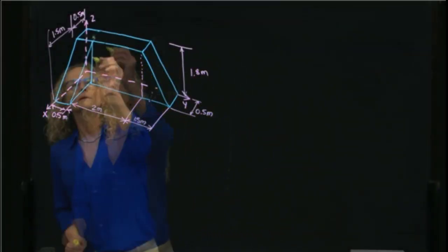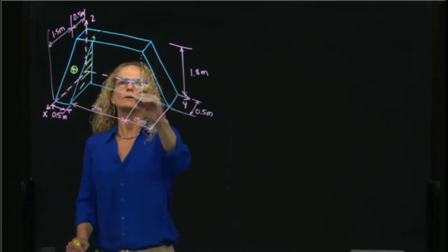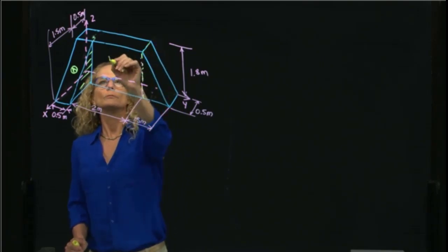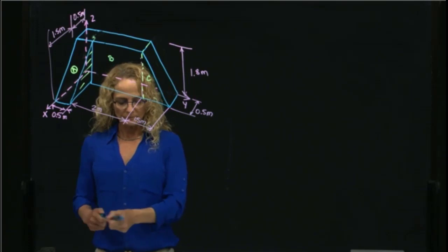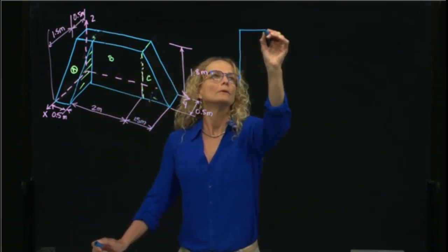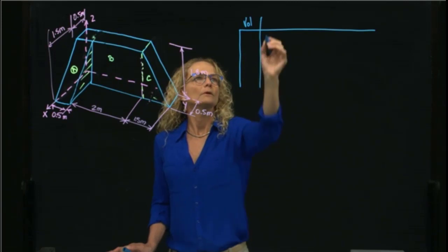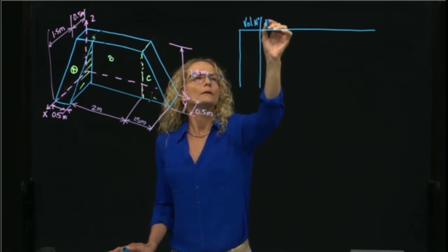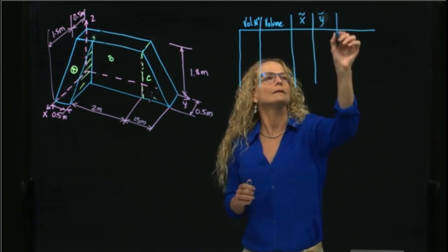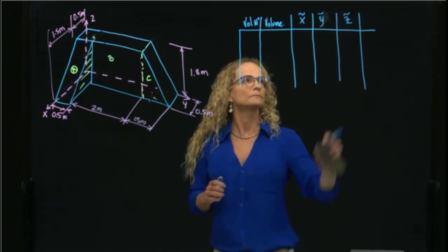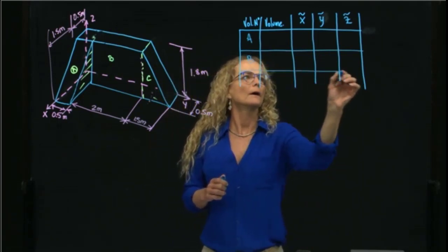I will divide that as triangle A, the whole rectangle that is behind as B, and this triangle C. I will do a little table, as usual. The table will have the volume number, the volume value, where the X of this volume is located, where the Y is located, and where the Z is located. I have volume A, volume B, and volume C.